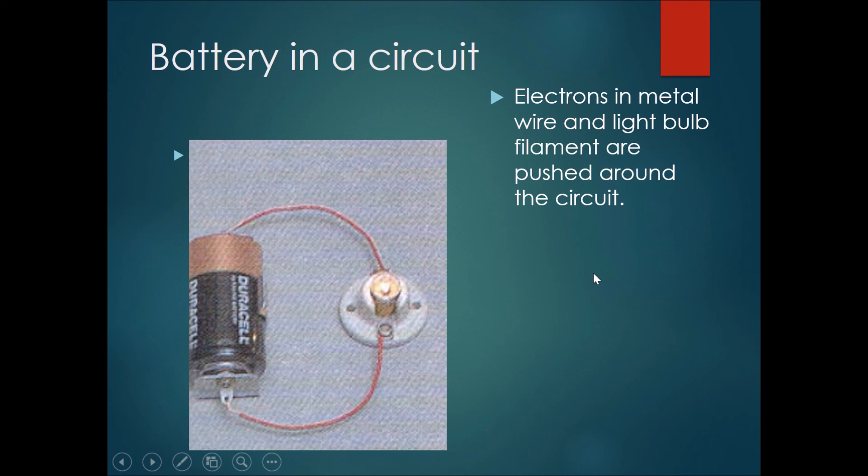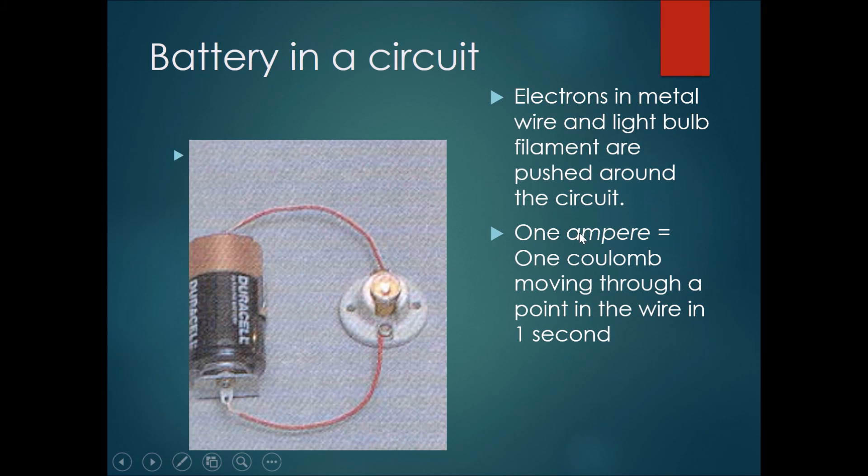So for a battery in a circuit the electrons in the metal wire and the light bulb are pushed around the circuit. One ampere equals one coulomb moving through a point of wire in one second. The battery pushes electrons in one direction only.